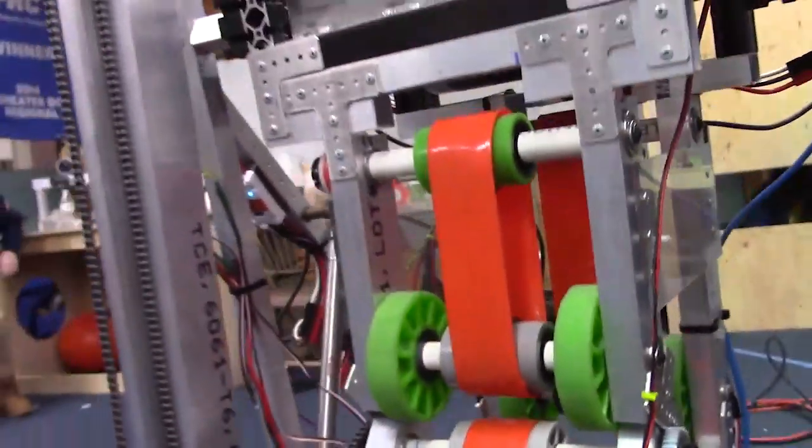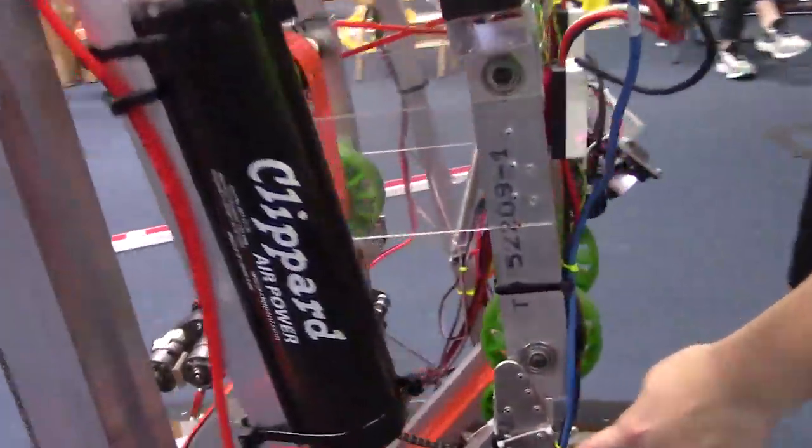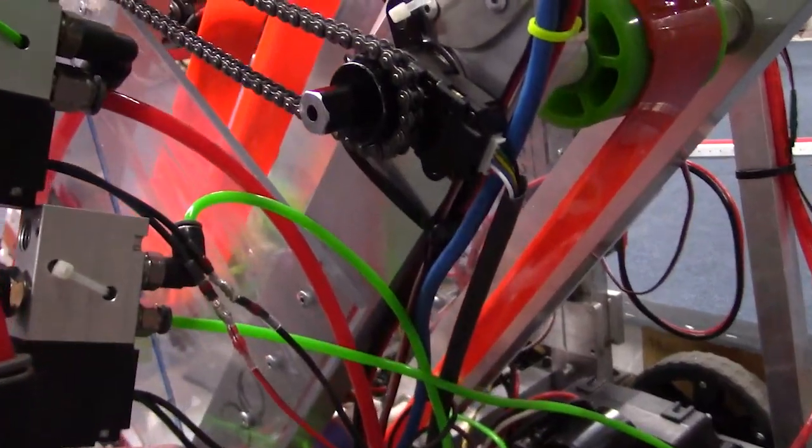Moving further along over on this side here, we have a REV throughbore encoder, which is used to count ticks on the elevator.